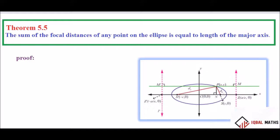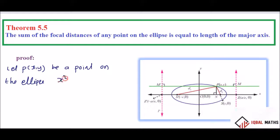The focal distance axis equals 2a. So that's what we will say. The first equation of the ellipse is x squared by a squared plus y squared by b squared equal to 1. So point here to go. Let P be a point on the ellipse x squared by a squared plus y squared by b squared equal to 1.